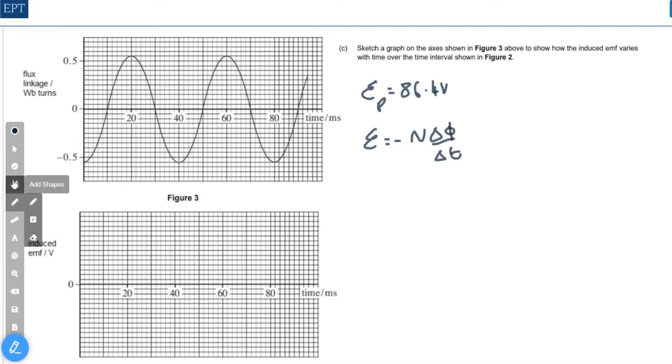So in other words what we're looking at again is the gradient of the graph. So what I'm going to do is go through and add in some key points. At the turning points of the graph the gradient is 0 so we're able to put 0 at 20, 40, 60 and 80 on our graph.